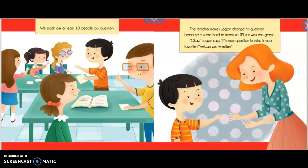We each ask at least 10 people our question. The teacher makes Logan change his question because it's too hard to measure. Plus, it was too gross. Okay, Logan says, my new question is, who is your favorite Mexican pro wrestler?